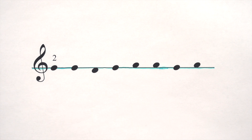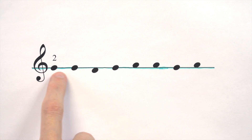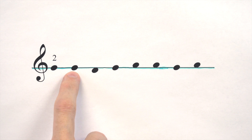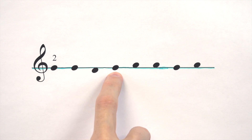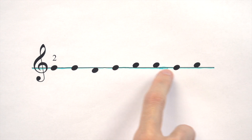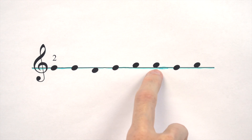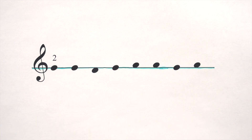Can you point to all the notes that are actually on the G line? Let's find them all. I've got one here, here — this one's below the line so it's not a G. We've got a G here, and another G here, with this, this, and this being a step above the line.